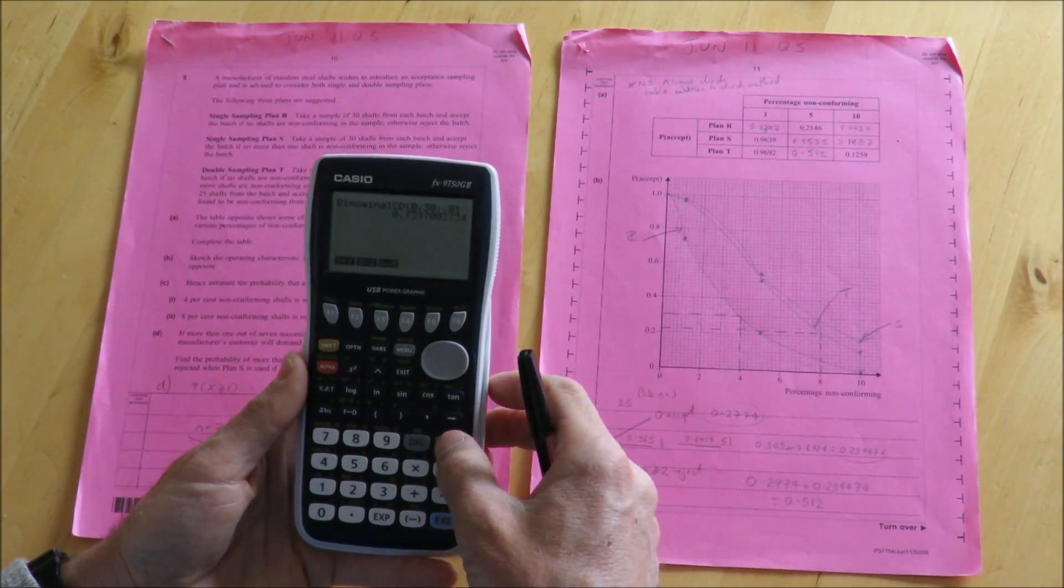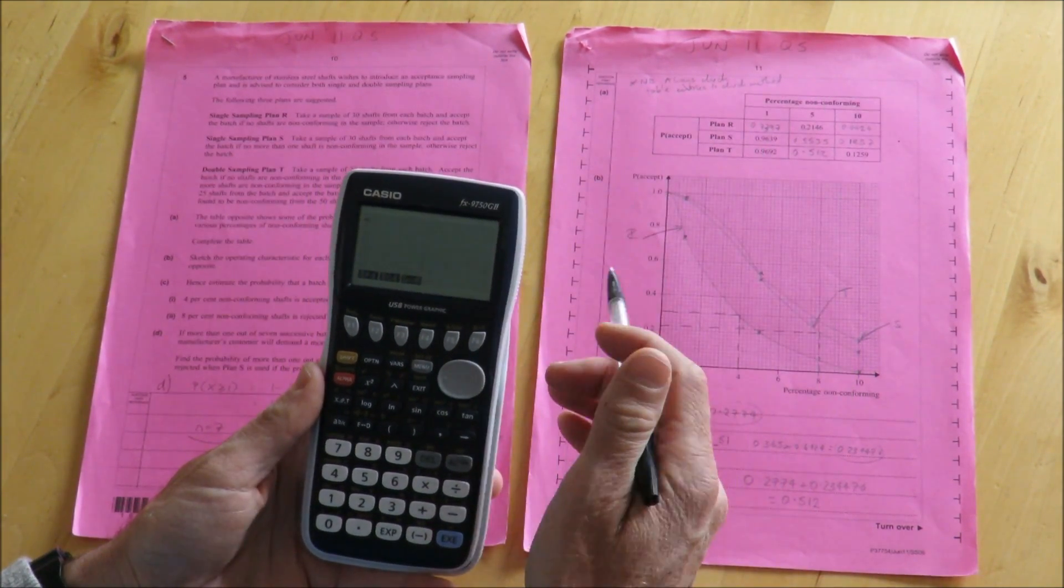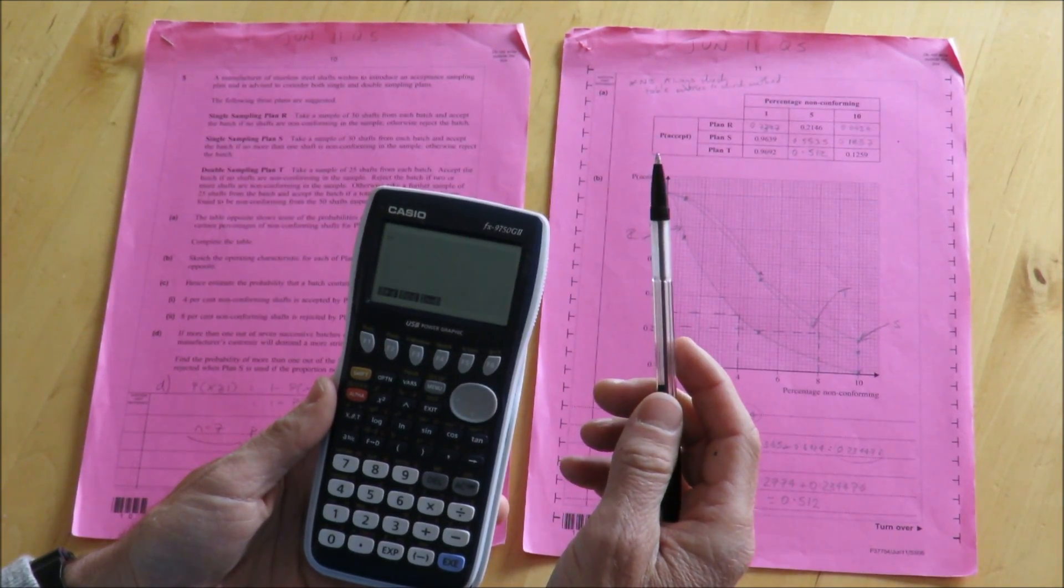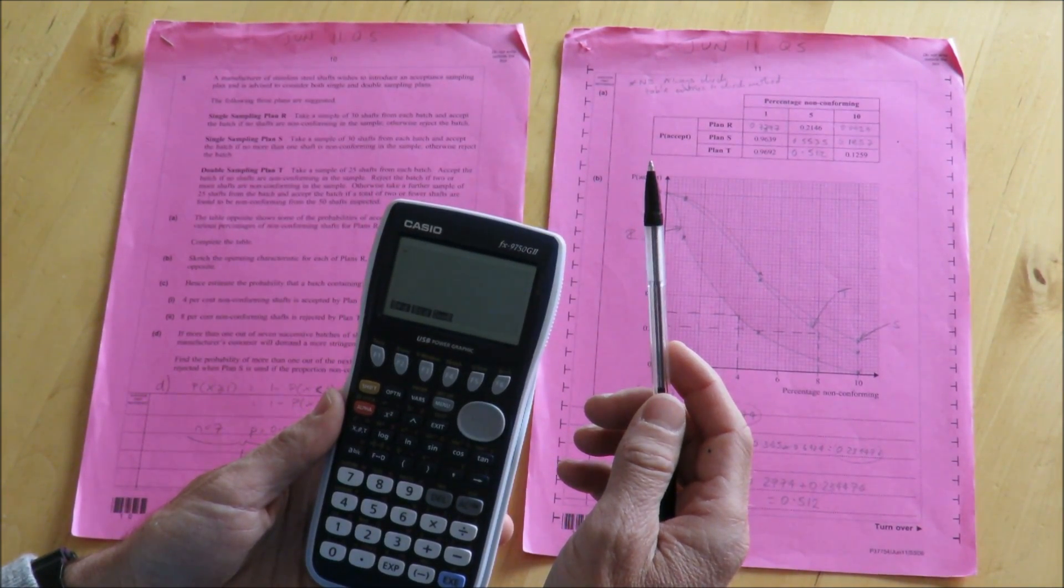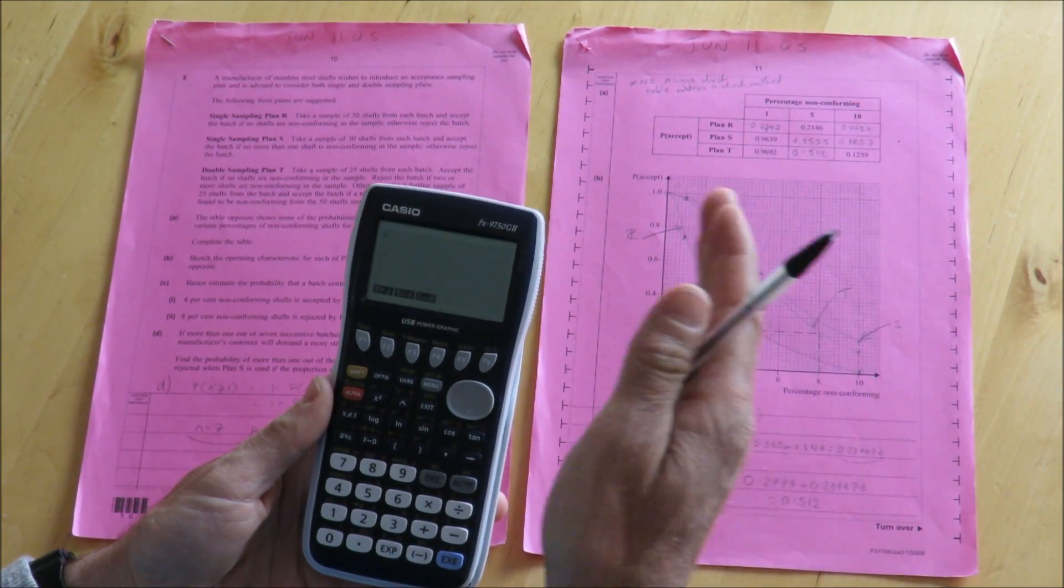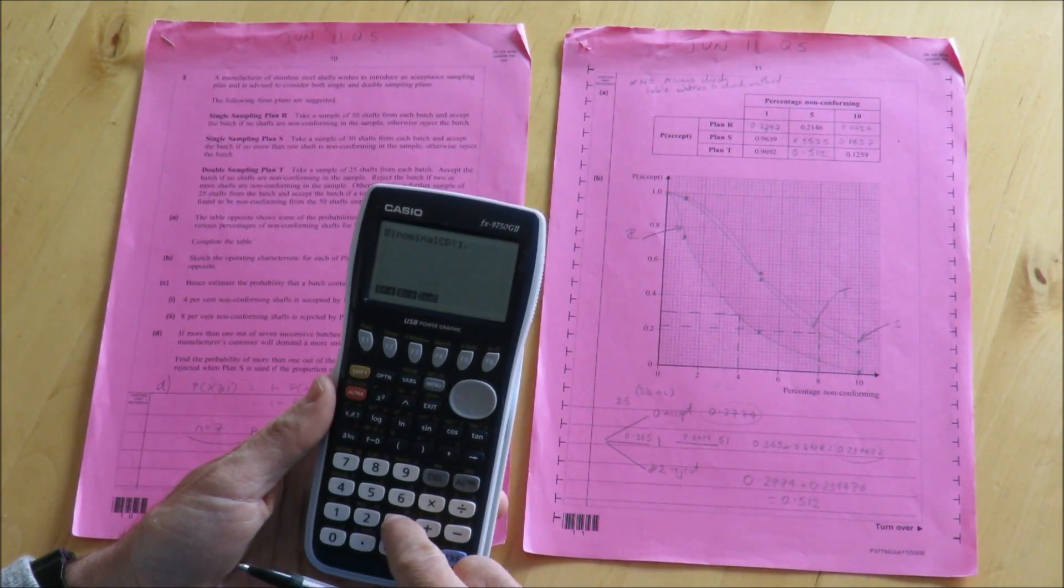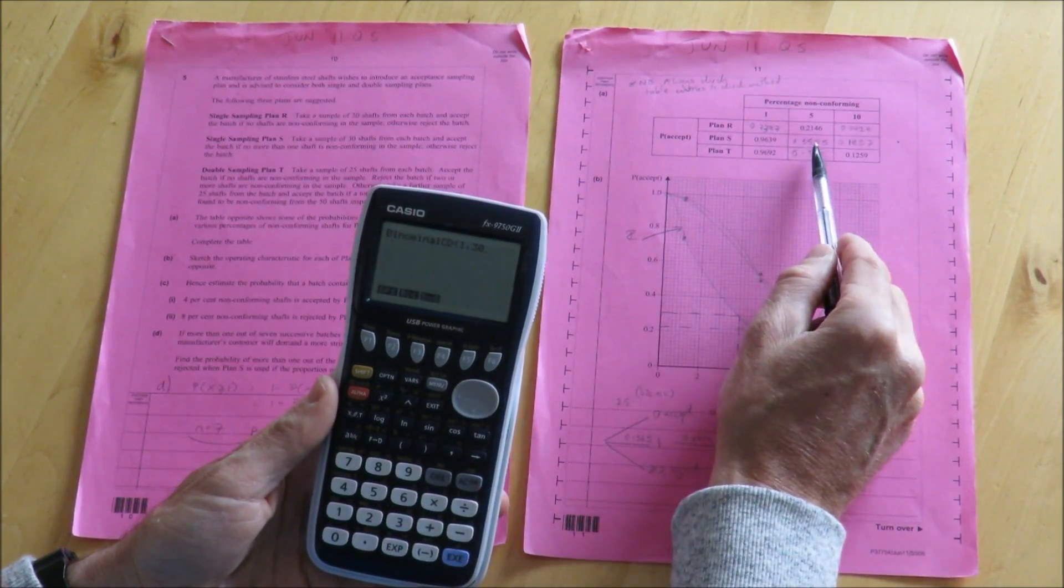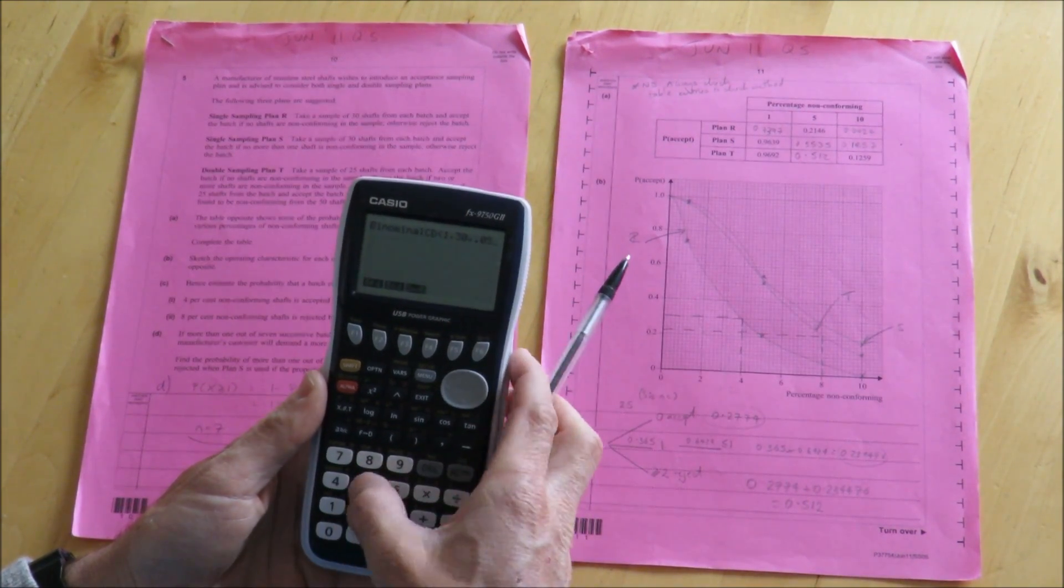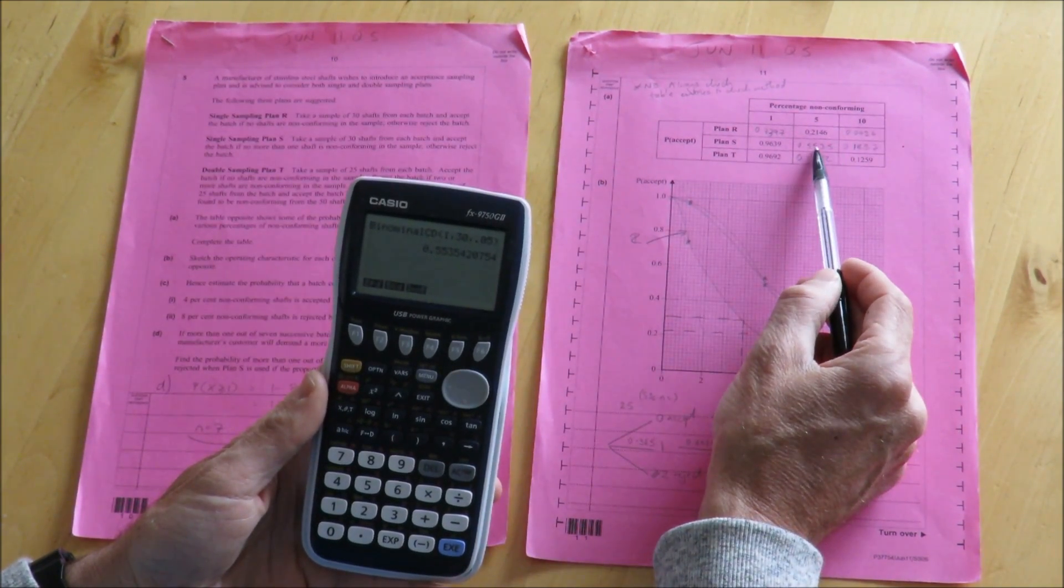Very similar method here for the second entry. So this is for plan S. In plan S, there are 30 items, but this time we'll accept the batch if no more than one shaft is non-conforming in the sample. So that means that one or fewer will be accepted. So this time BCD 1, and 30 in the sample, and for this particular entry there are 5% non-conforming. So 0.05 non-conforming, and that gives me my 0.5535, which appears here.